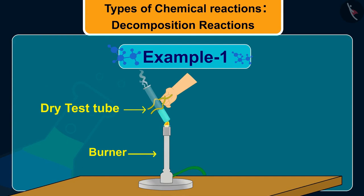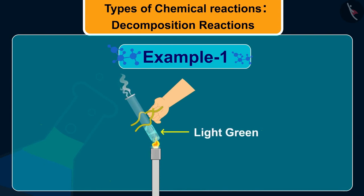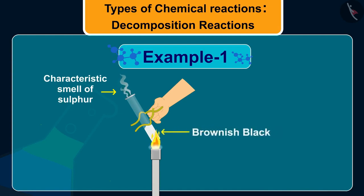You will observe that the color of ferrous sulfate changes from light green to white. You will also observe a characteristic smell of sulfur and on further heating of the white substance, it will turn into brownish black color.